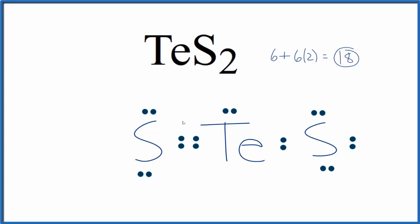If you calculate the formal charges, you'll find out that this sulfur here has zero, the tellurium is plus one, and then this sulfur over here with the single bond is minus one. We'd like our formal charges to be as close to zero as possible.